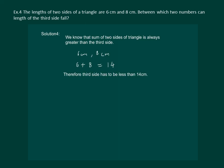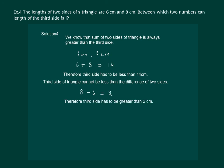In the question, we are asked between which two numbers the length of the third side falls. Let us also use the result that the third side cannot be less than the difference of the two sides. The difference is 8 minus 6, which equals 2, so the third side has to be greater than 2 cm. That means the third side of the triangle has to be greater than 2 cm but less than 14 cm.